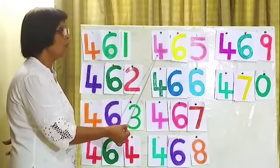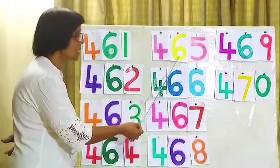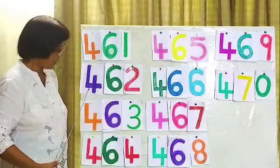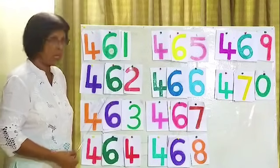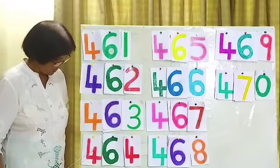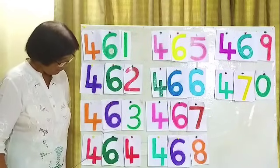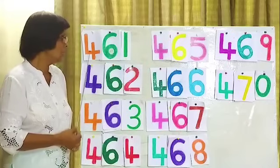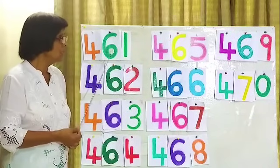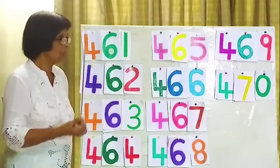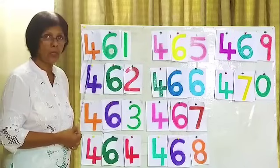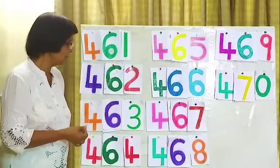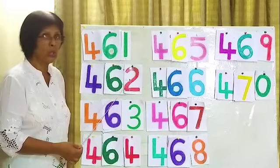This one 465, this one 462, here 464, here 461. We start from here: 461, 462.